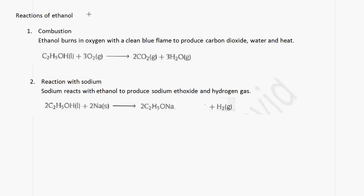We're going to look at the reactions of the members of the alcohol group, and we're going to use ethanol as an example. The formula for ethanol is C2H5OH. Ethanol burns in oxygen with a clean blue flame to produce carbon dioxide, water, and heat. The equation is: C2H5OH + 3O2 → 2CO2 + 3H2O.